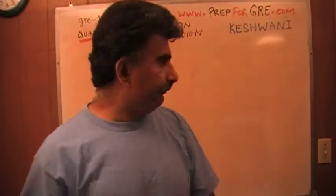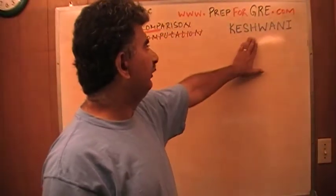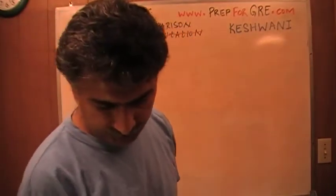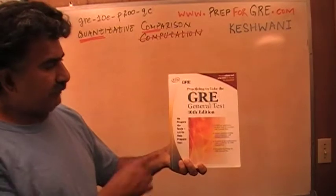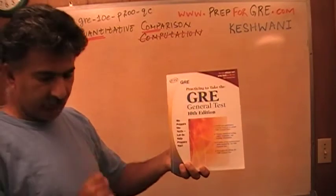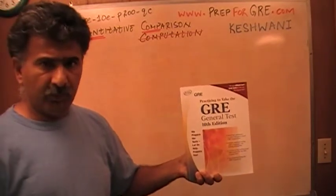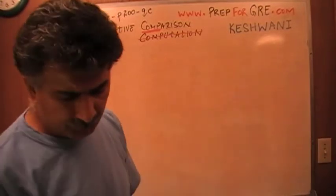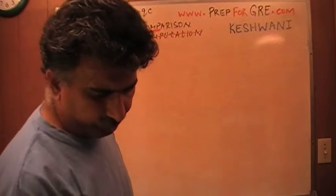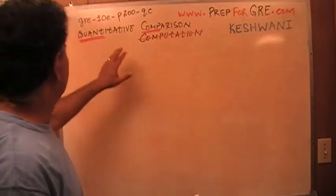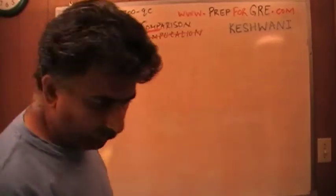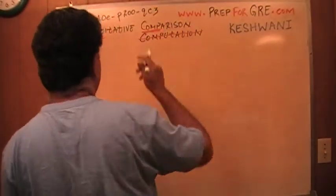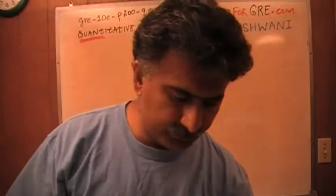Hello, my name is Keshwani — that's K-E-S-H-W-A-N-I. I have been solving math problems out of this book, practicing to take the GRE General Test, the 10th edition. If you do not own this book already, purchase it immediately. There are 7 exams in it. The problem I am about to solve is the one you will find on page number 200, quantitative comparison question number 3. Let's take a look at it.